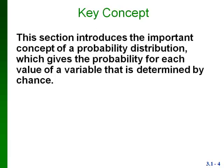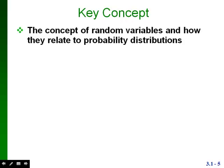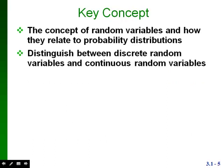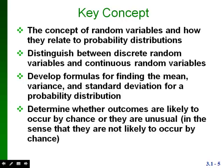In Section 5-2, we'll be talking about random variables and the concept of a probability distribution — something that gives the probability for each value of a variable determined by chance. We'll look at how to distinguish between outcomes likely to occur by chance and outcomes that are unusual. Key concepts include random variables, how they relate to probability distributions, distinguishing discrete from continuous random variables, and developing formulas for the mean, variance, and standard deviation of a probability distribution.